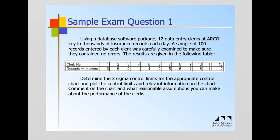First, the first point is to review the question itself. So let's go through it. The question is as follows: Using a database software package, 12 data entry clerks at ARCO key in thousands of insurance records each day. A sample of 100 records entered by each clerk was carefully examined to make sure they contain no errors. The results are given in the following table. You see the table with the clerk number and the records with errors. Determine the three sigma control limits for the appropriate control chart and plot the control limits and relevant information on the chart. Comment on the chart and what reasonable assumptions you can make about the performance of the clerks.